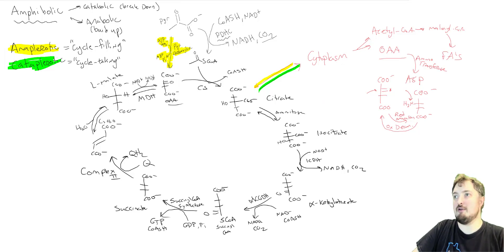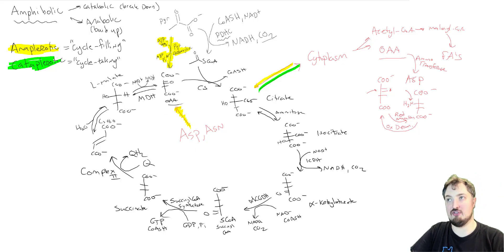Now coming back around to this aspartic acid OAA thing. Our aspartic acid and also asparagine can enter the cycle as OAA, which would be a cycle filling reaction. Because again, those are cousins. Or we could take them off and do a cycle taking reaction, a cataplerotic reaction to make aspartic acid. And use that for building up. We'd be using those to make new proteins.